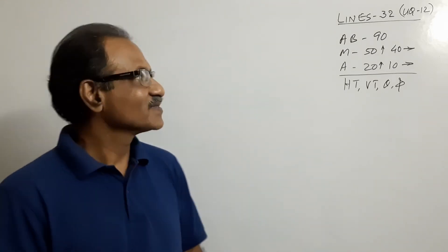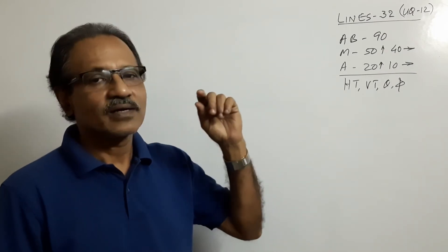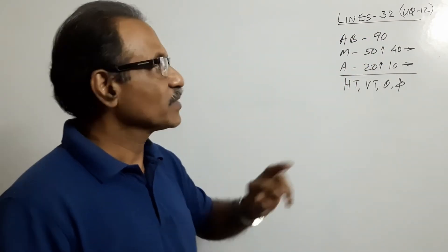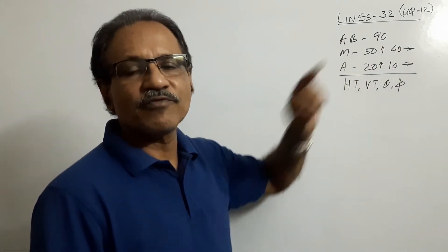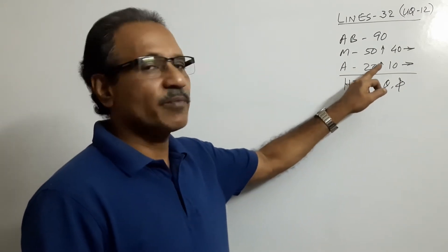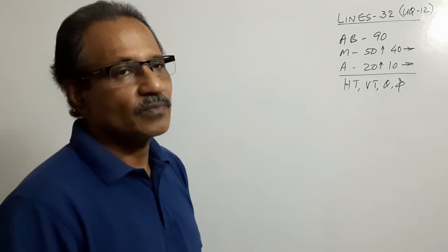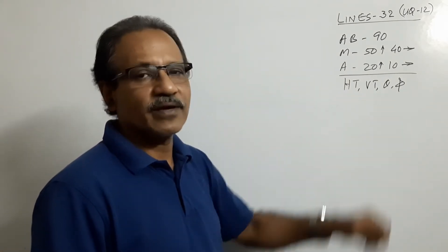Hi students, Lines 32. A line AB 90mm long has its midpoint 50mm above HP and 40mm in front of VP, first quarter. The end A is 20mm above HP and 10mm in front of VP, again in first quarter. You are asked to draw the projections and find out HT, VT, theta, and phi.